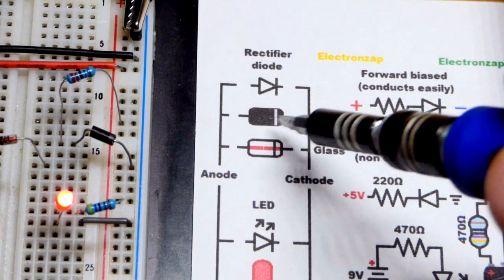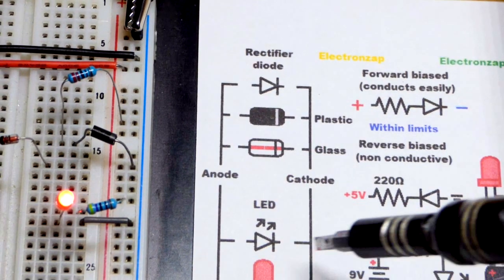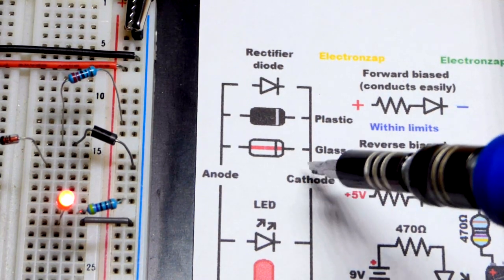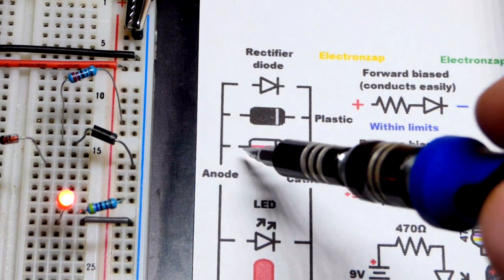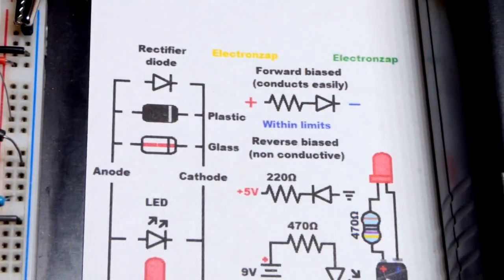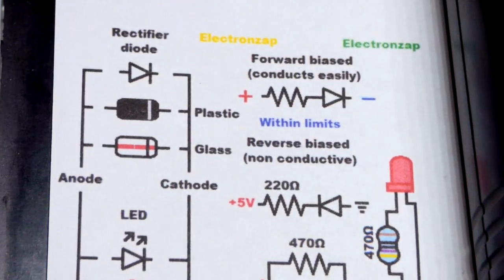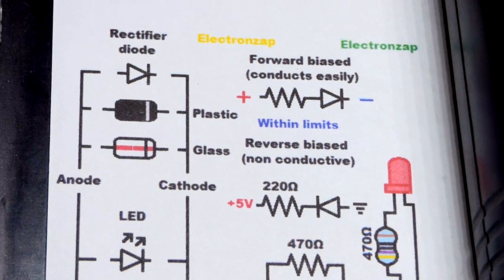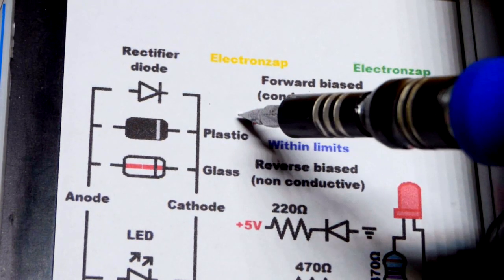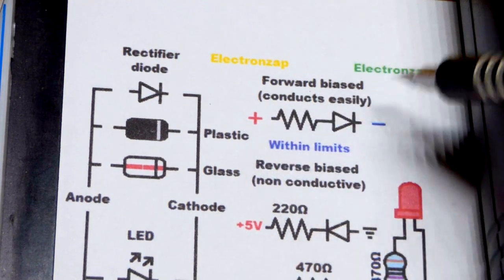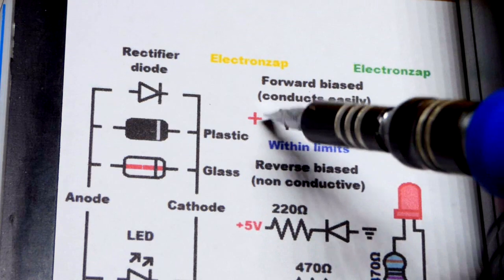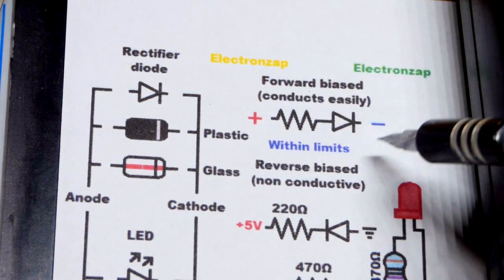For most diodes it's a band marking the cathode, but for LEDs there's something else we'll get to. You've got to make sure the cathode is on the right side of the circuit and the anode on the other, because diodes are polarized. Here we have a simple schematic showing the positive side of the power supply and the negative side — that's when the diode conducts most easily, and you need a resistor to limit current.